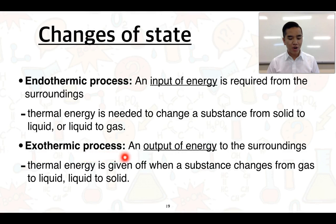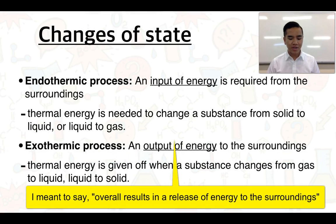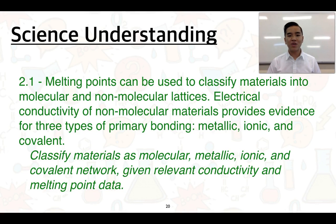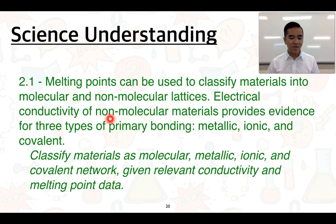An exothermic process overall requires an output of energy to the surroundings. This means that heat energy is given off when a substance changes from a gas to a liquid and then a liquid back into a solid. The last point in this video is looking at how we can use different physical properties to help classify materials according to their bonding and structure. Melting points can be used to classify materials into molecular and non-molecular lattices, and electrical conductivity of non-molecular materials helps provide evidence for three types of bonding: metallic, ionic, and covalent.